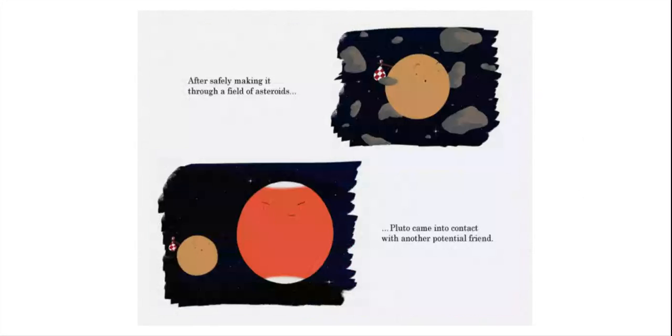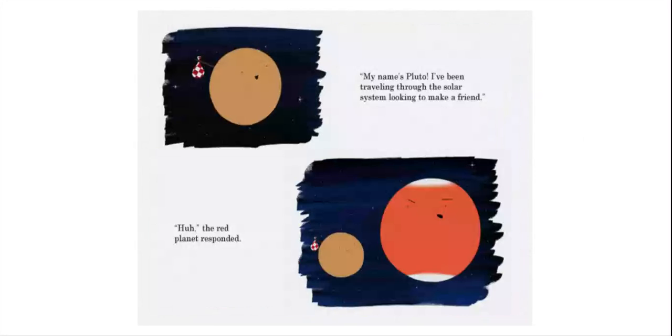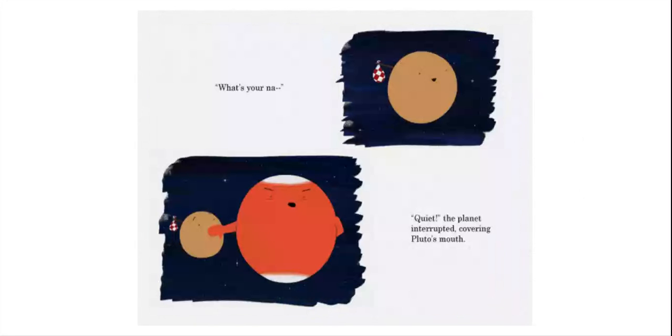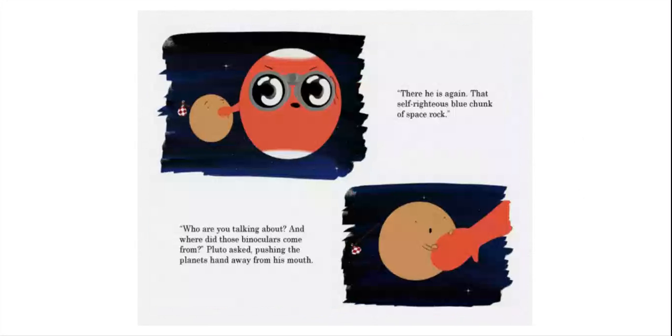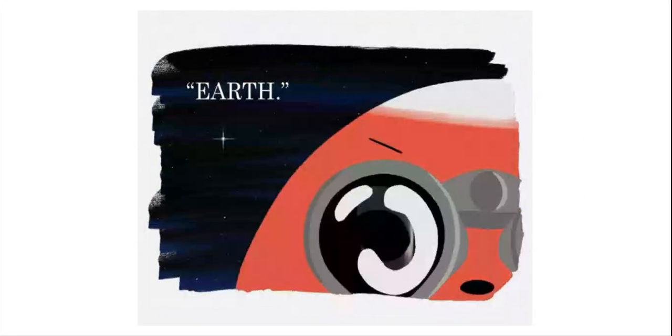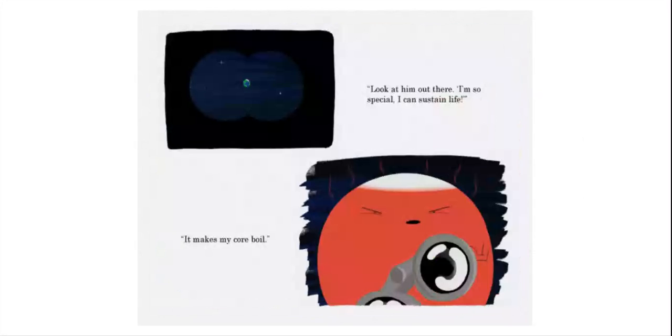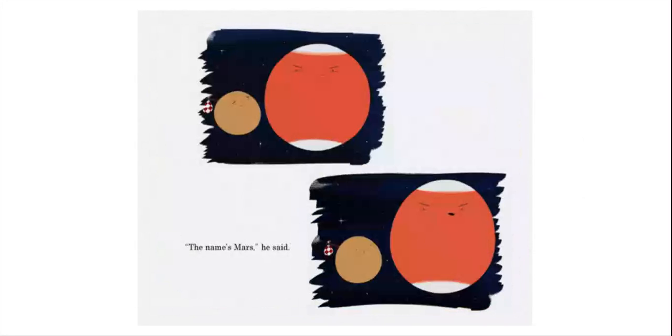After safely making it through a field of asteroids, Pluto came in contact with another potential friend. My name's Pluto, I've been traveling through the solar system looking to make a friend. Huh, the red planet responded. What's your name? Quiet! The planet interrupted, covering Pluto's mouth. There he is again, that self-righteous blue chunk of space rock. Who are you talking about? And where do those binoculars come from? Pluto asked, pushing the planet's hand away from his mouth. Earth. Look at him out there. I'm so special. I can sustain life. It makes my core boil. The name's Mars, he said.